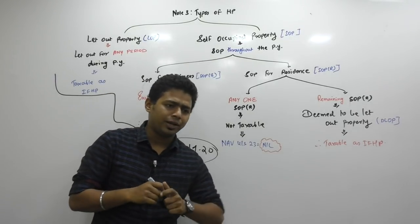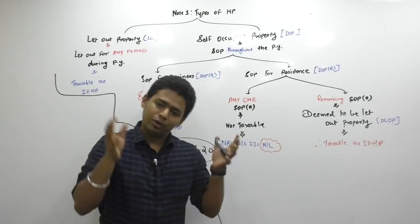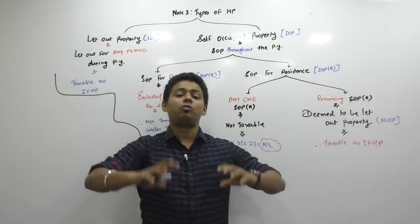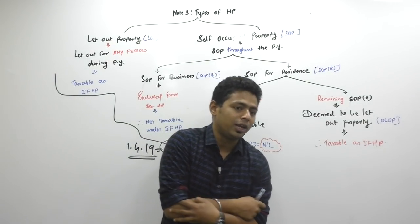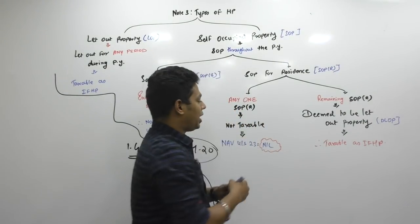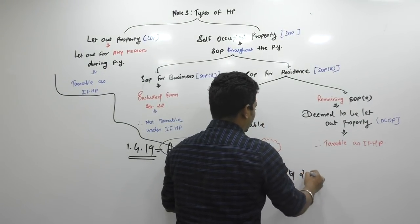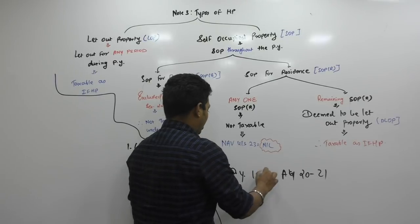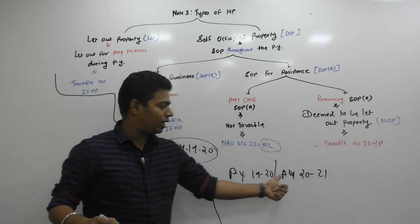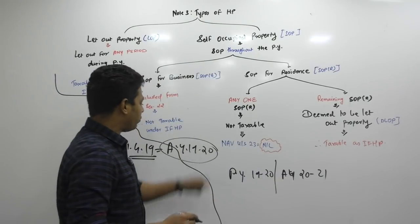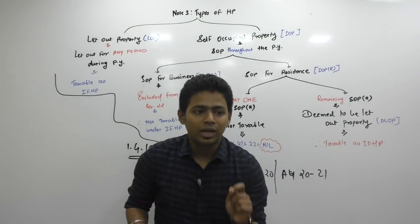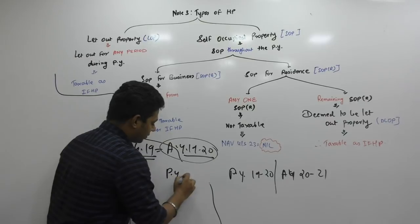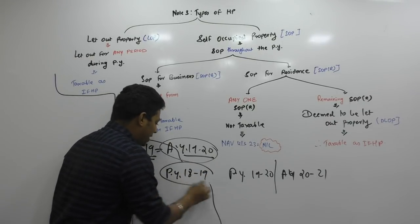Every financial year is the assessment year, and every assessment year will become previous year the next year. So when AY-2021 will start, our PY will be 19-20. Right now today, AY-19-20 is starting, and for AY-19-20, my PY is 18-19.